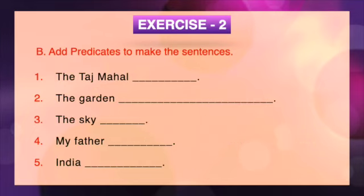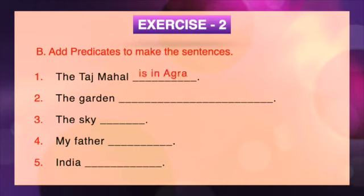Exercise B: Add predicates to make sentences. 1. The Taj Mahal is dash — you can write 'the Taj Mahal is in Agra', or 'the Taj Mahal is very beautiful', or 'the Taj Mahal is one of the seven wonders of the world'. It is up to you what you want to write. 2. The garden dash — you can write 'the garden has many beautiful flowers'. You can also think of your own answers. 3. The sky dash — the sky is blue.